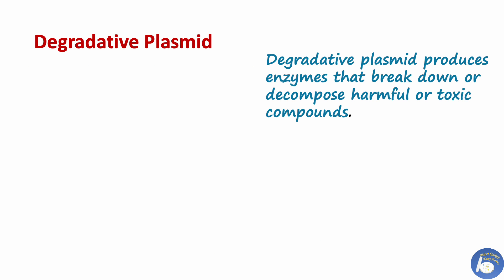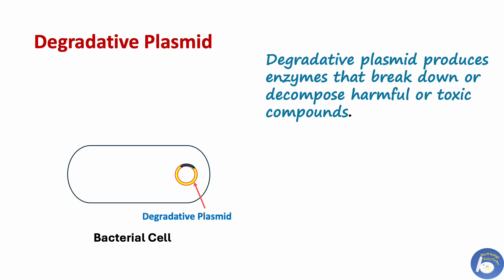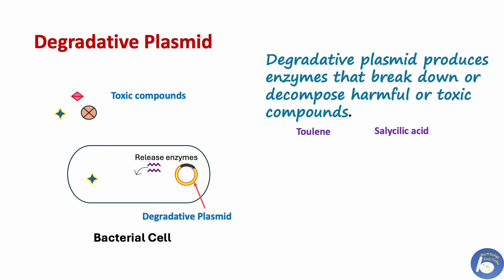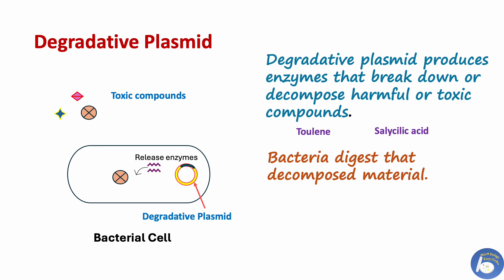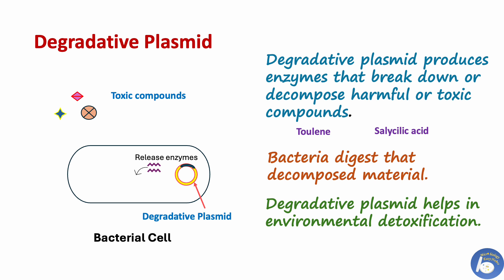Degradative plasmid: degradative means able to decompose or break down. Degradative plasmid carries genes that release certain enzymes capable of degrading compounds not commonly found in nature, such as toluene and salicylic acid. Enzymes released by such genes not only break down harmful and toxic compounds but also help bacteria digest and utilize them, thus aiding in environmental detoxification.